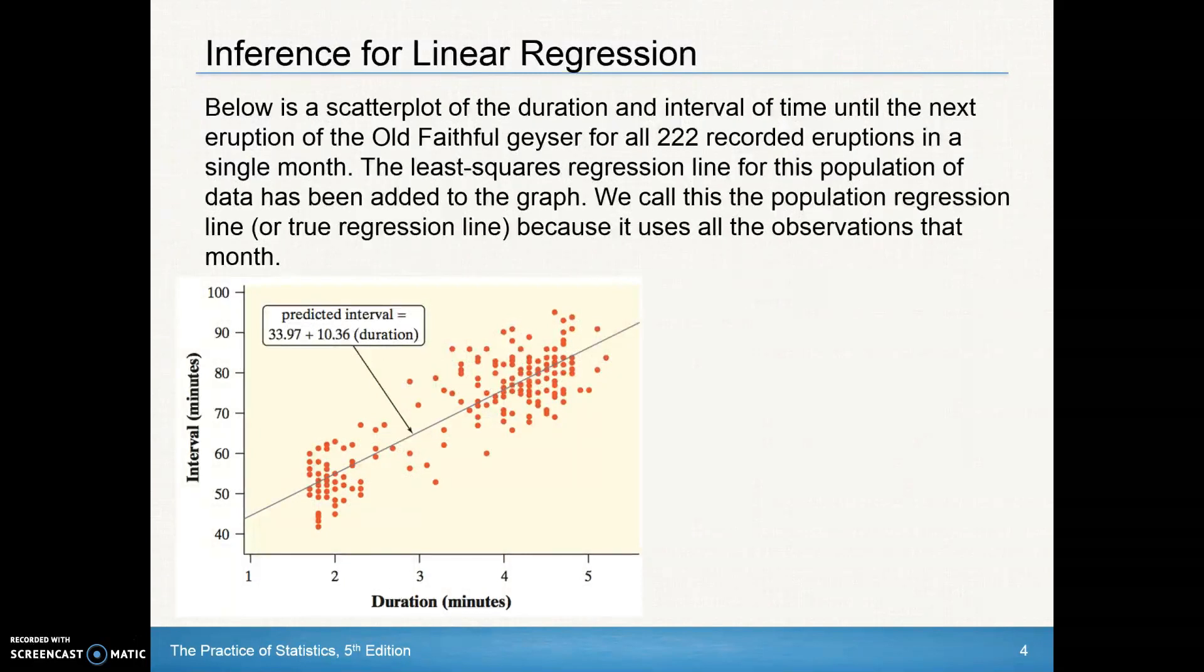Below is a scatterplot of the duration and interval of time until the next eruption of Old Faithful for all the 222 recorded eruptions in a single month. The least squared regression line for this population has been added to this graph. We call this the population regression line, or the true regression line, because these are all the data points, the 222 data points for that month. So we've got all the data and we can accurately calculate the regression line for that data.